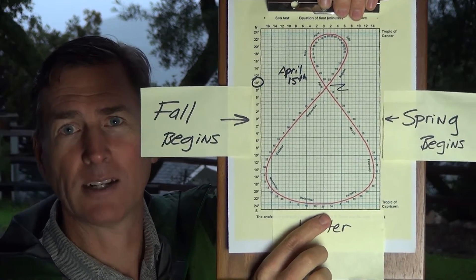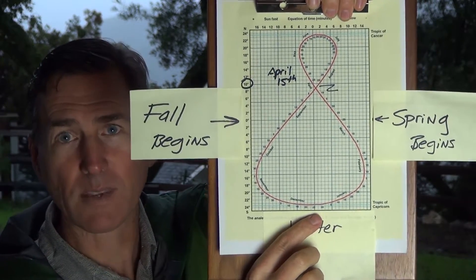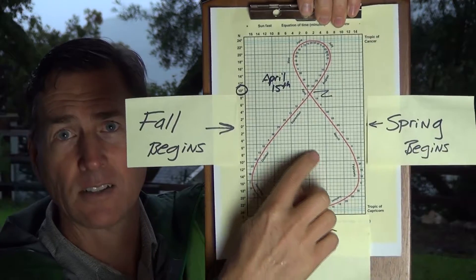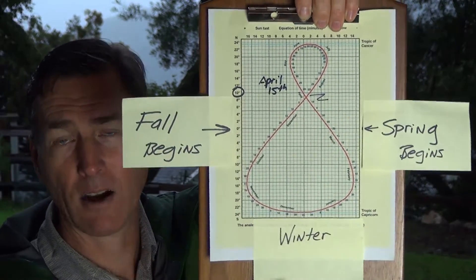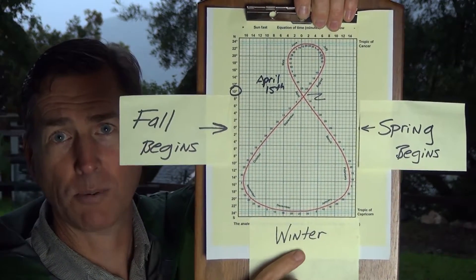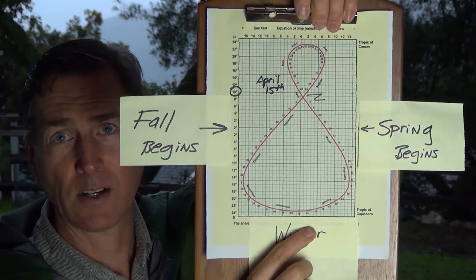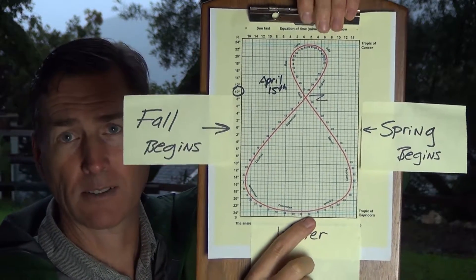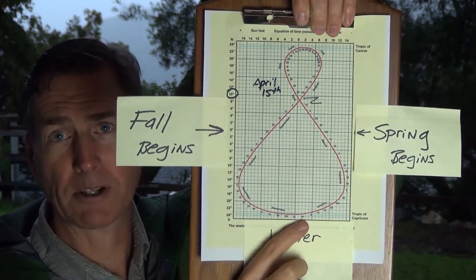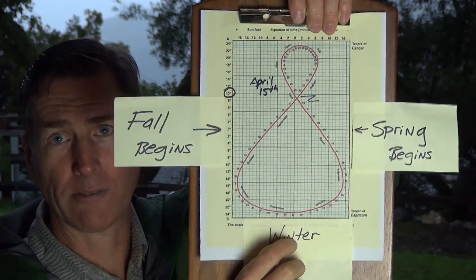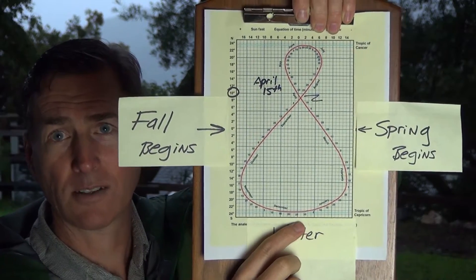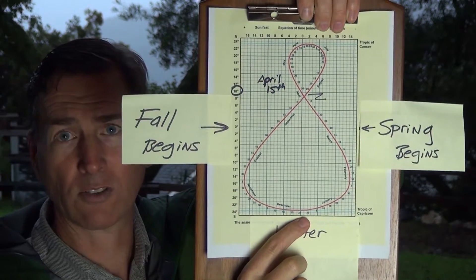Now this is our wintertime right here, and this analemma tells us where the sun's directly overhead on any day. So I put winter down here for a sticker on December 21st or thereabouts. It's within a day or two. Leap year kind of messes with this, so I'm going to always use the 21st. December 21st, that's where this winter solstice is.